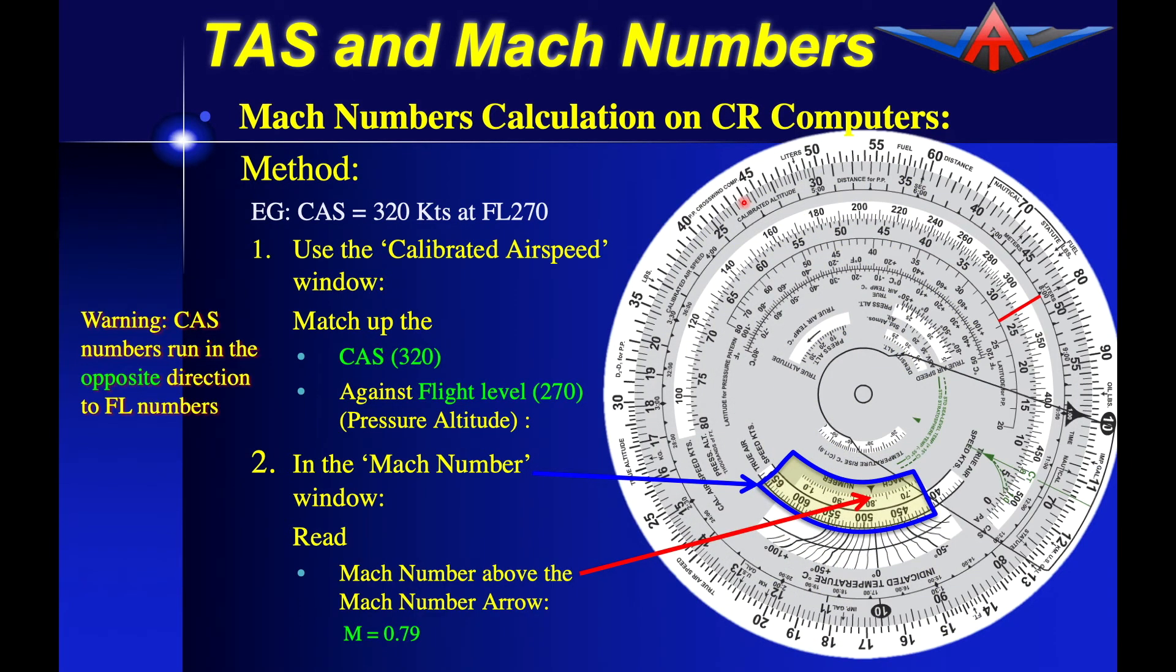By comparison, if we look at this on the Jeppesen CR3 computer, the use of the calibrated airspeed and the flight levels is identical. But instead of the Mach number being on the window on the outside, we read the Mach number above this tiny little arrow here. We get the same answer, 0.79.